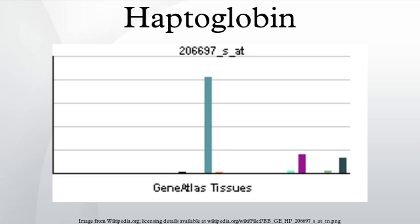Three genotypes of Hp are therefore found in humans: Hp1-1, Hp2-1, and Hp2-2. Hp of different genotypes have been shown to bind hemoglobin with different affinities, with Hp2-2 being the weakest binder.